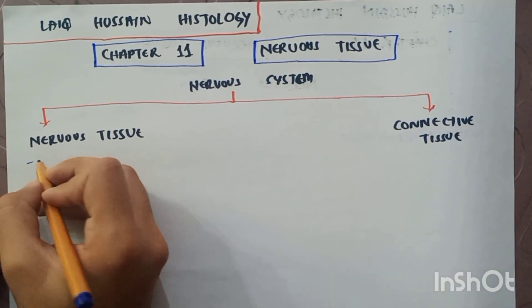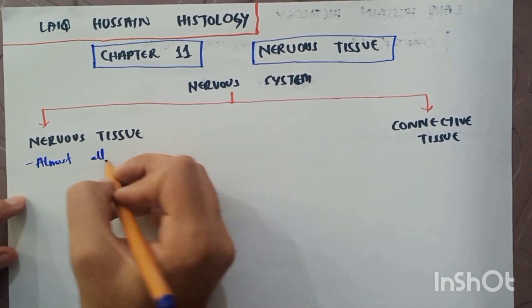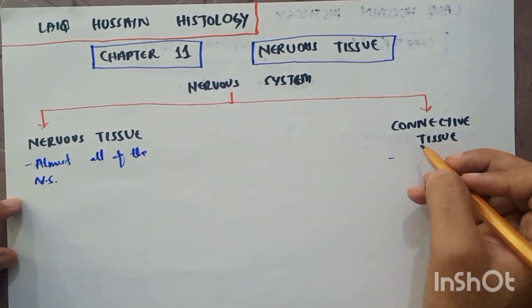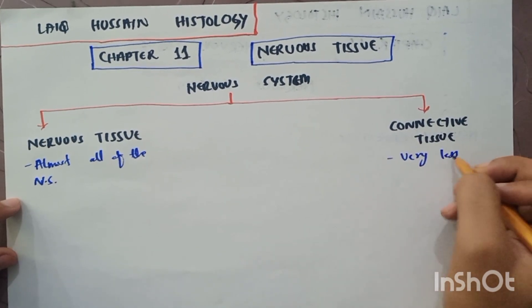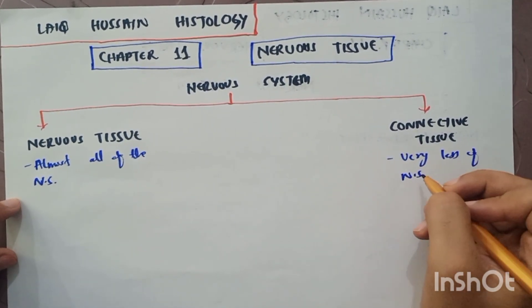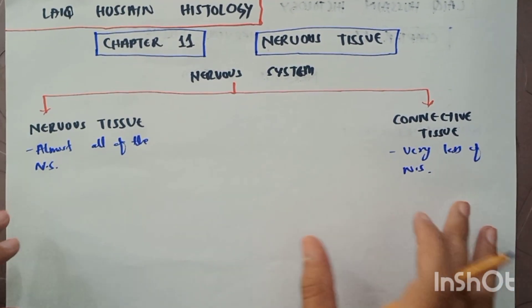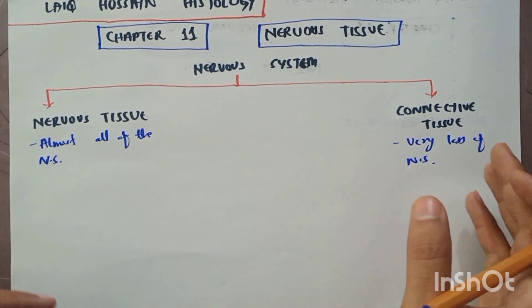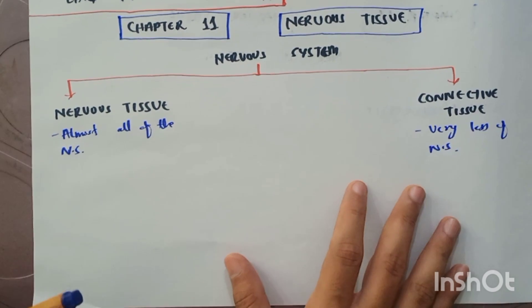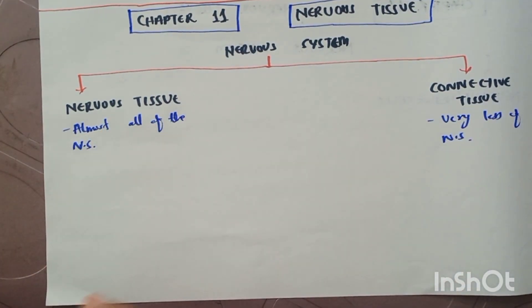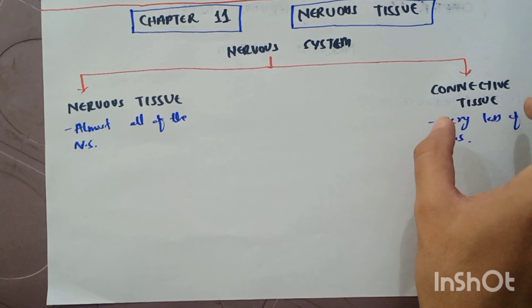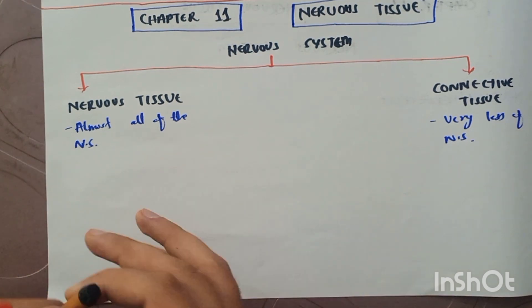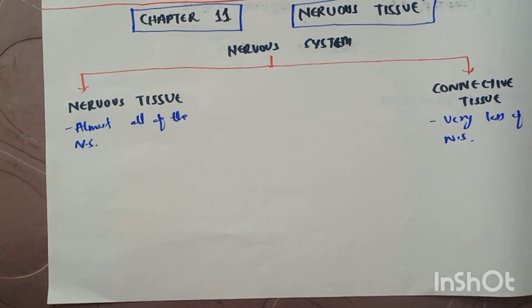The nervous tissue forms almost all of the nervous system of the human body, but the connective tissue forms very little of it. However, the connective tissue does form some structures in the nervous system that we cannot neglect. In this chapter, we are mainly concerned with the nervous tissue and not the connective tissue.